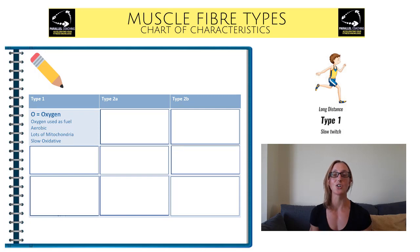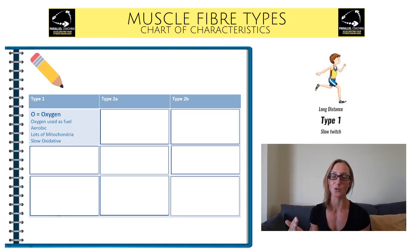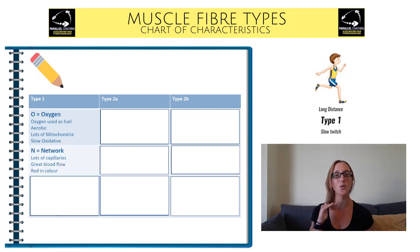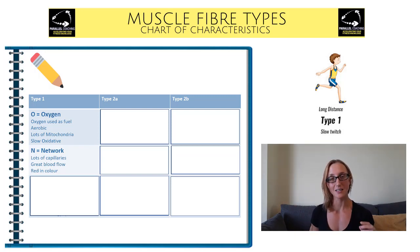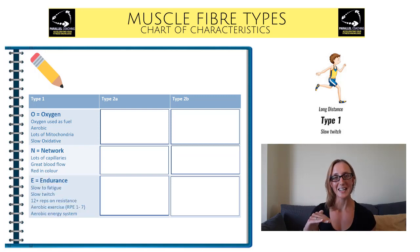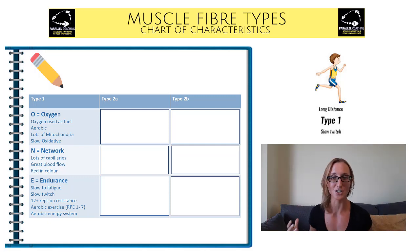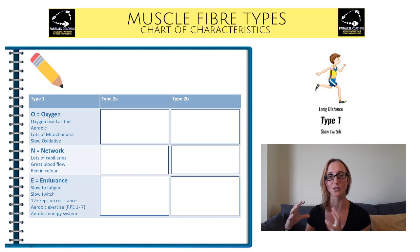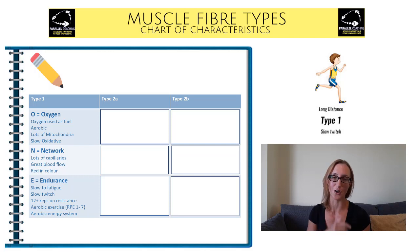Start filling in the chart with O, which stands for oxygen. Write in that it's slow oxidative, because that's the muscle fibre type — it's slow twitch and it uses oxygen. You're also going to write in here: lots of mitochondria. Then going down, N stands for network, meaning it's got a huge amount of blood flow and therefore it is red in colour. Then for E, that stands for endurance — the type of exercises or rep ranges you do, things like going for a long run or a marathon. These muscles are slow to fatigue, so you can use them over and over without them fatiguing as quickly as some of the other muscle fibre types.